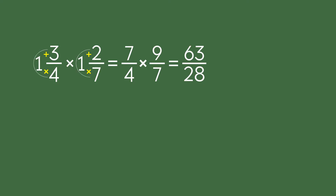We turn this into a mixed number by dividing 63 by 28. We get 2 and 7 over 28. We can simplify the fraction part by dividing both the numerator and the denominator by 7. So the final answer is 2 and 1 fourth.